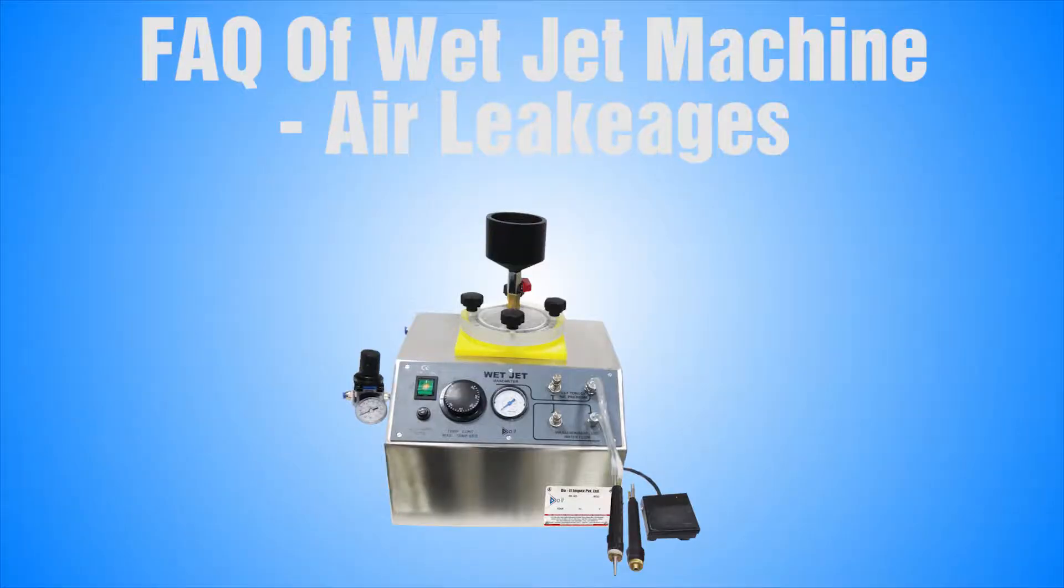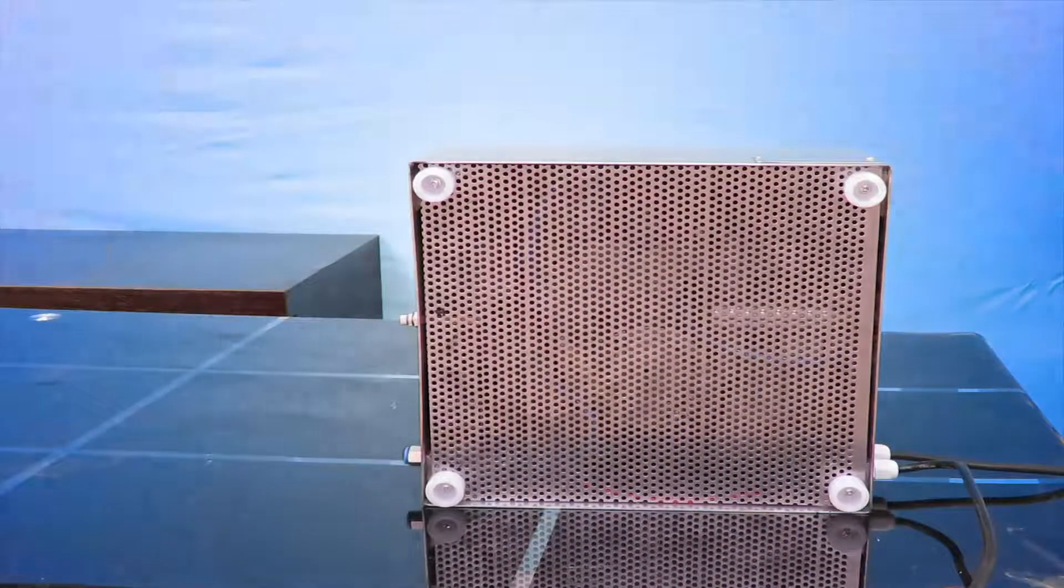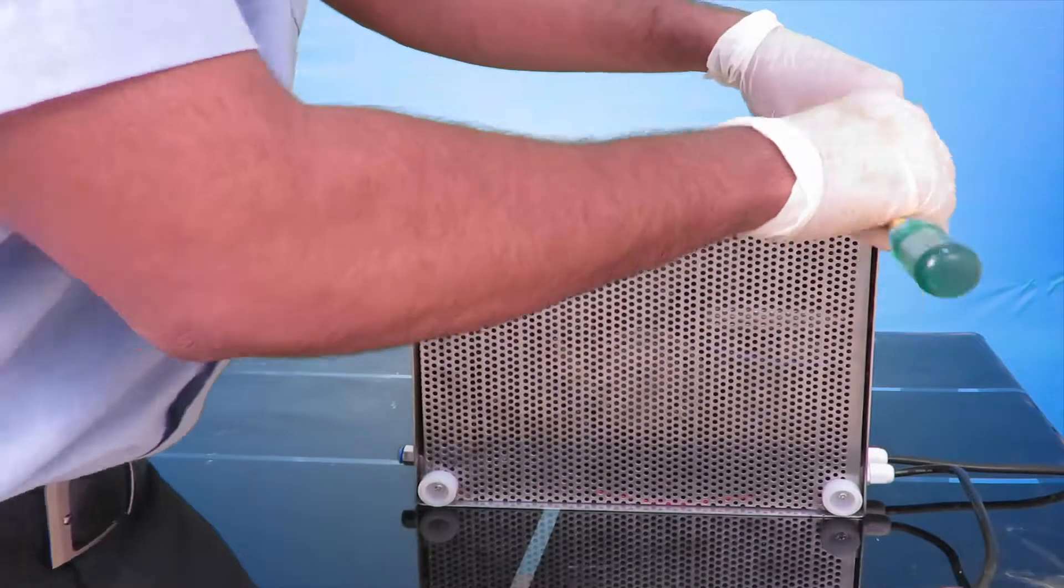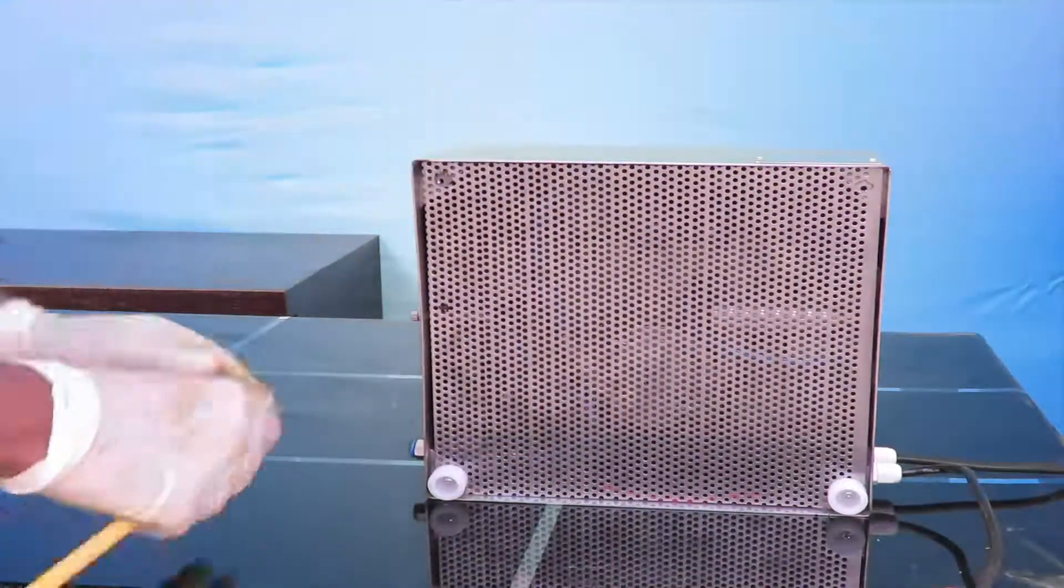In this video we will show how to change the spare parts and pipes of the Do It WetJet machine. For leakage and other issues, you will need to open the bottom cover of the machine after removing the electric connections and pipes connected to the pen.